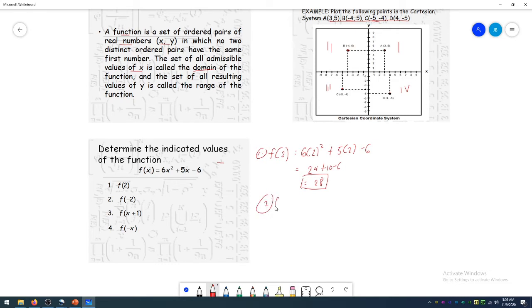For number 2, to find f(-2), that's 6 times (-2)², plus 5 times (-2) minus 6. Therefore, that's positive 4 times 6, that's 24, minus 10 minus 6. So that is 14 minus 6, that is 8.